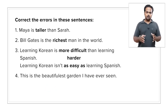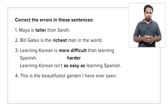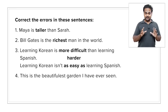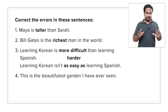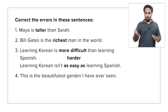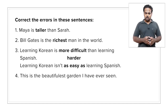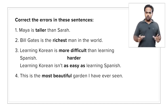And finally, what about number four? Here the problem is the word 'beautifulest' — there's no such word. We cannot say 'beautifuler' and 'beautifulest.' The adjective 'beautiful' does not have those forms. Instead, we have to say 'more beautiful' and 'most beautiful.' So: this is the most beautiful garden I have ever seen.